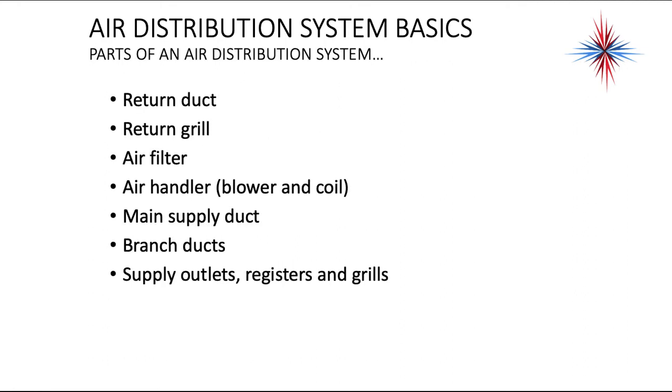The basic parts of an air distribution system is a return duct, a return grill, the air filter, the air handler, which includes a blower and a coil. You have your main supply duct, you have branch ducts, you have supply outlets, registers, and grills.